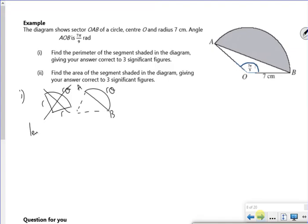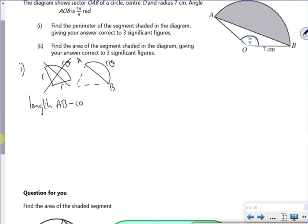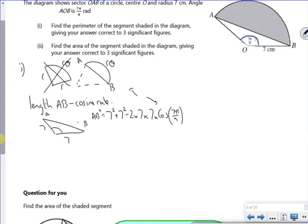So the length from A to B, we'll be using the cosine rule. Because I know that that's 7, I know that that's 7, I know that that angle is 7π over 9. So this is A to B. So AB squared is 7 squared plus 7 squared minus 2 times 7 times 7 times cos of 7π over 9. That needs to be in radians.